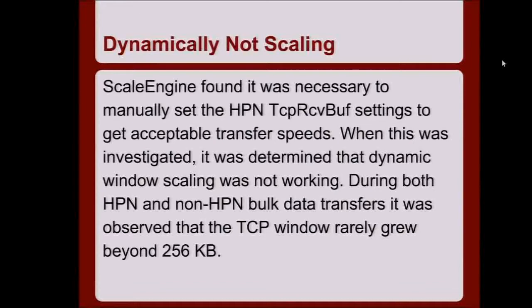Interestingly, on Linux the result you get from getsockopt about the socket buffer is different — it's the maximum, not the current state. It seems the HPN code assumed everybody was using Linux. The code that was supposed to make this all magically work was never growing beyond maybe 256K, because it wasn't putting enough pressure to trigger the OS TCP stack's socket buffer growth.